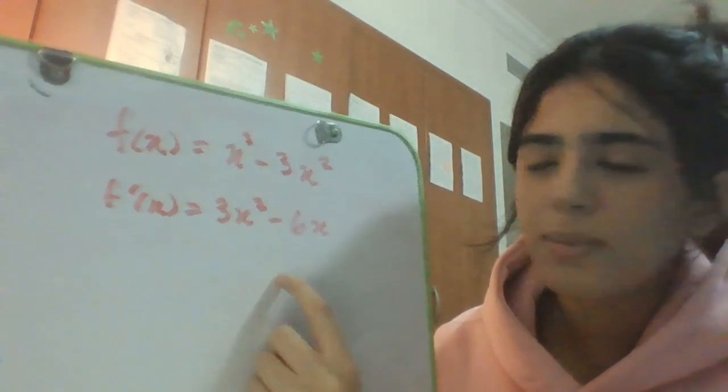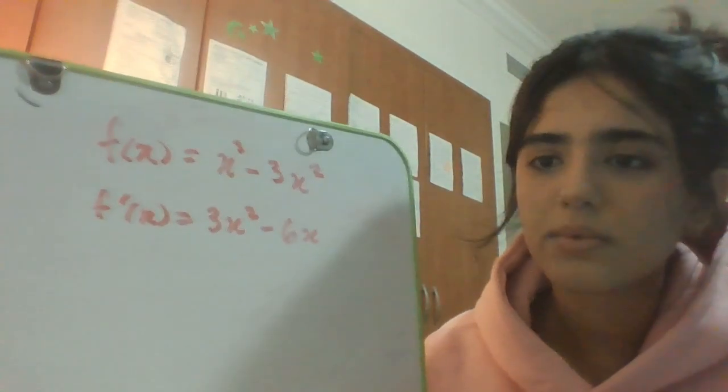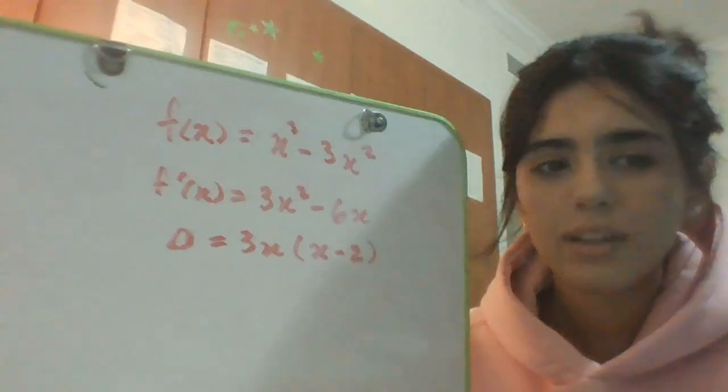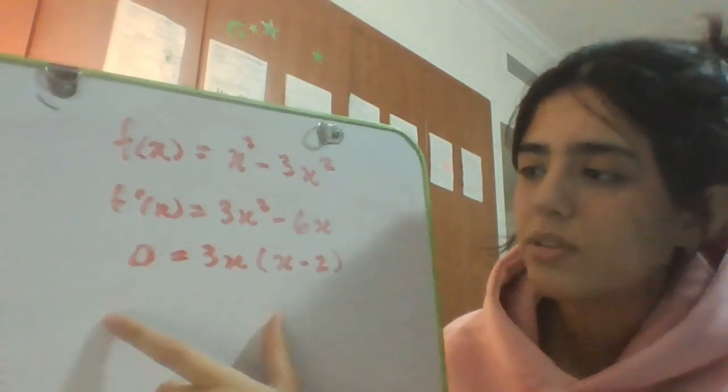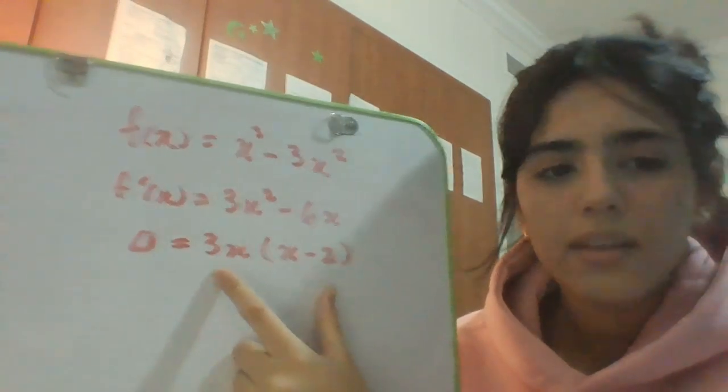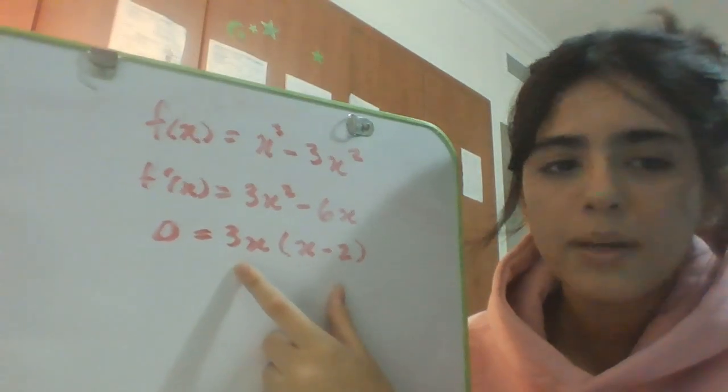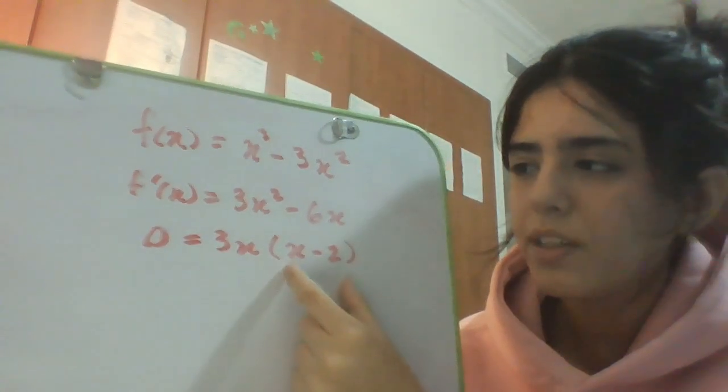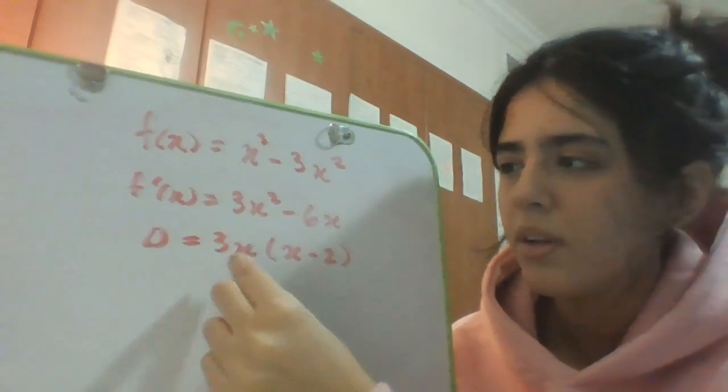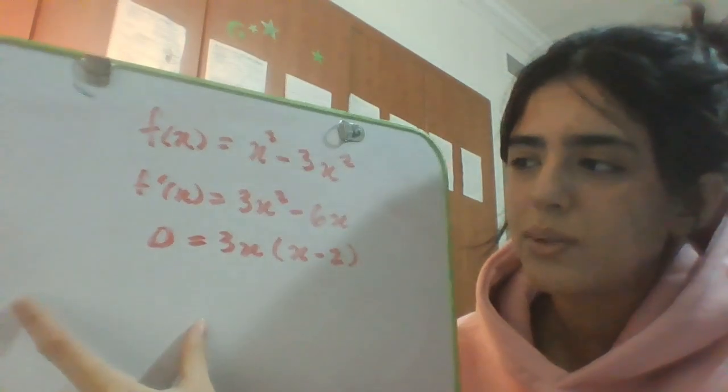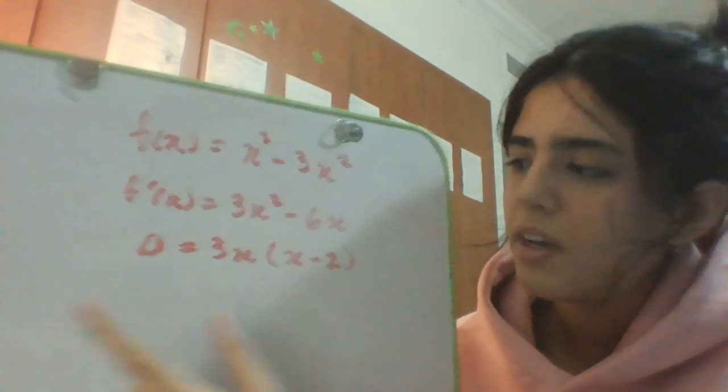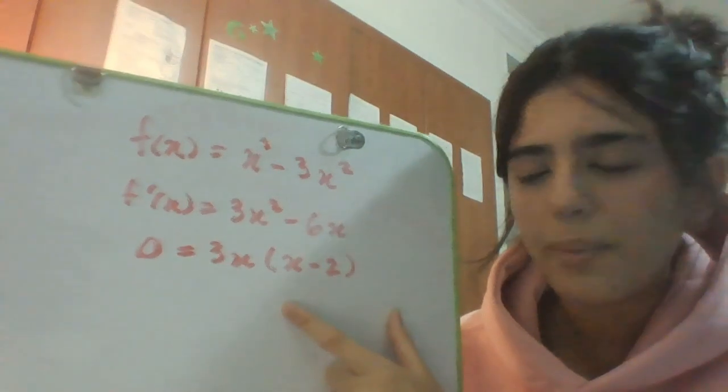Here I set it equal to zero and factored it. I think you can tell directly what your two critical numbers are going to be. But to make it easier you can just solve for each term and make each equal to zero. Like 3x = 0, do it separately to find the value of x. And x - 2 = 0, do it separately to find the value of x.